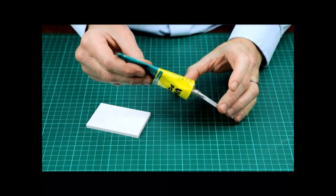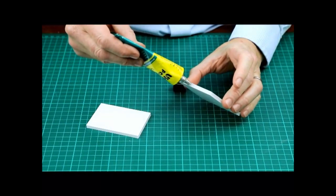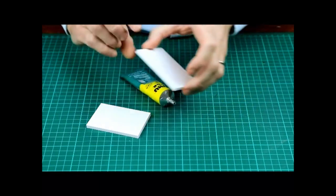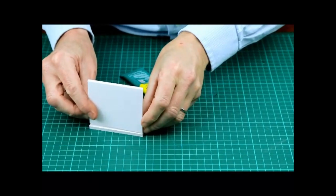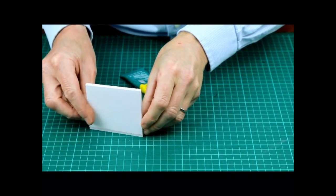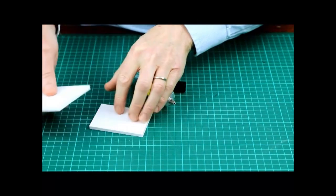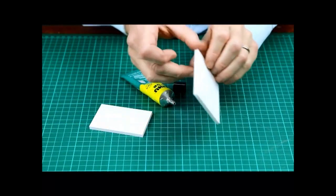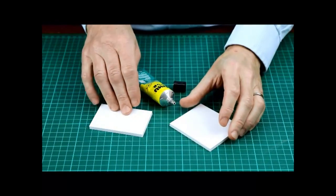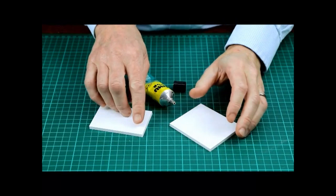Run some glue along the edge of the foam board and bring the two pieces of foam board together. Then immediately pull apart. Leave to one side for about two minutes until the adhesive has become touch dry.